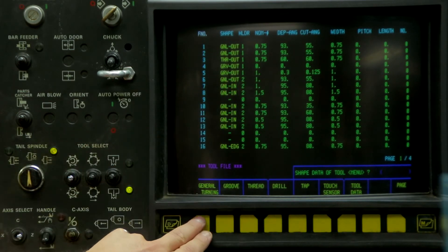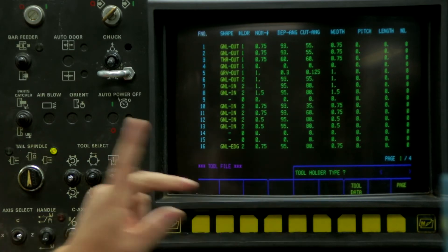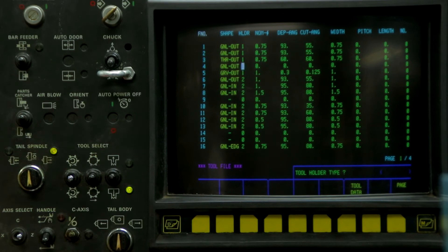So we're going to go general turning, outer diameter, the holder type is number 1 which is an OD turning tool.